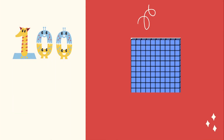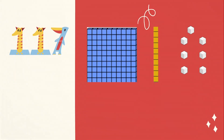So, how can we show the numeral 117? Can you guess? The numeral 117 is made up of one flat of hundreds, one rod of tens, and seven units of ones. See here.